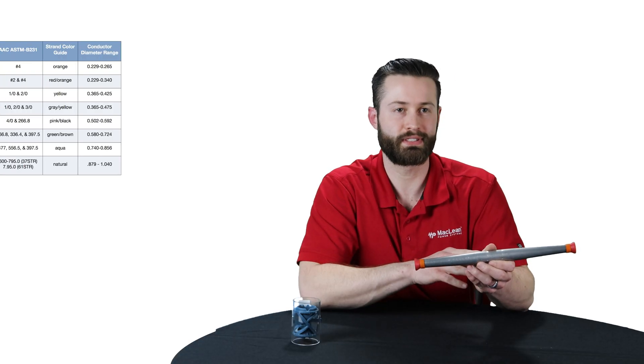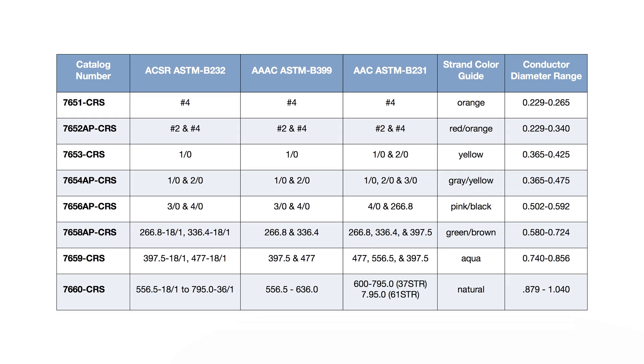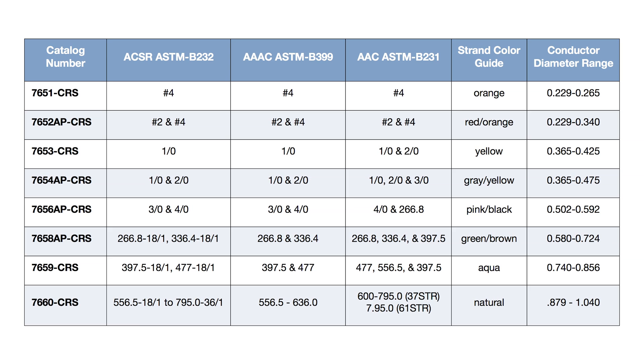There are actually eight different sizes in total, starting with our 7651, all the way up to our 7660 CRS, which can hold a 795 ACSR.